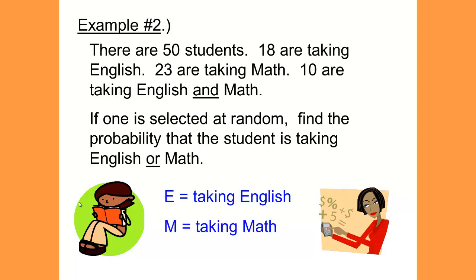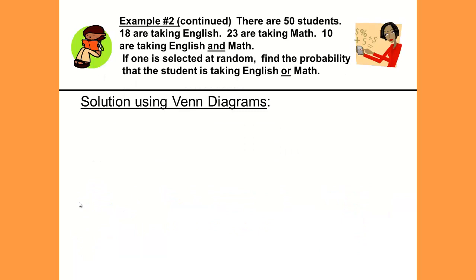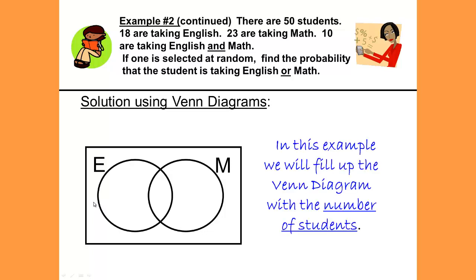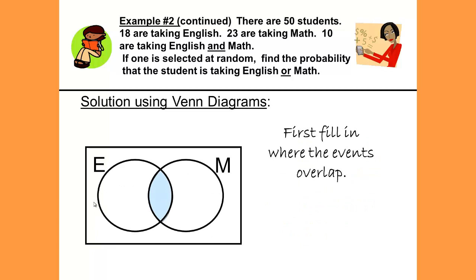For our purposes for this problem, E represents taking English, M represents taking math. Let's first do this solution using Venn diagrams. First we'll draw a Venn diagram, our box with two circles, E for taking English, M for taking math. In this example we will fill up the Venn diagrams with the number of students. First we fill in where the events overlap. That is always the first step.